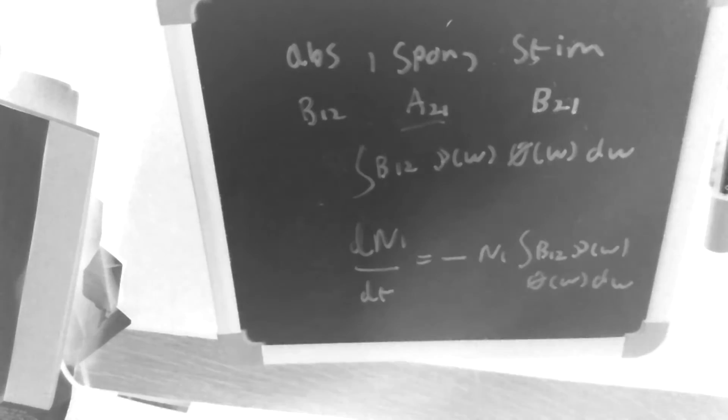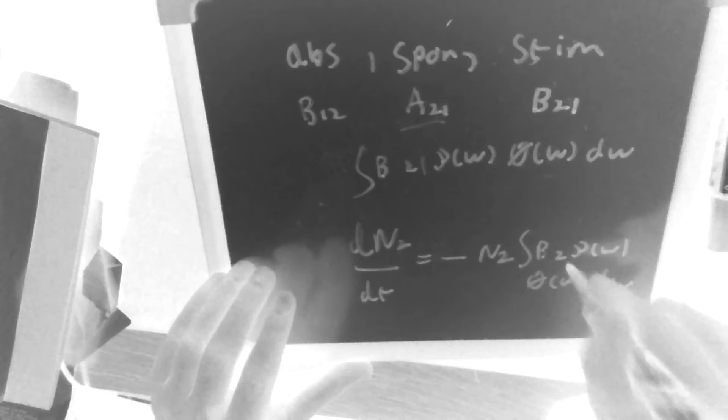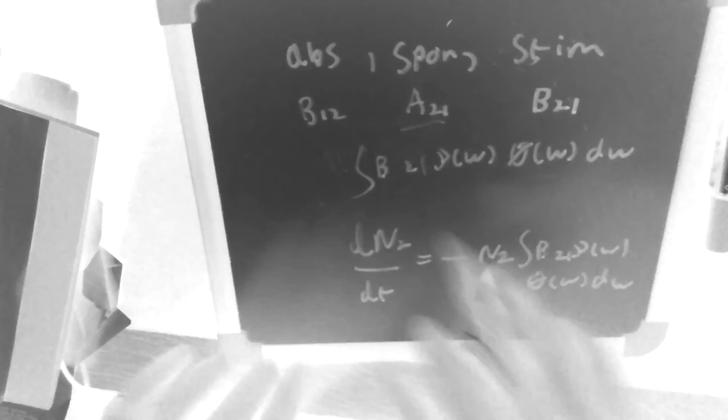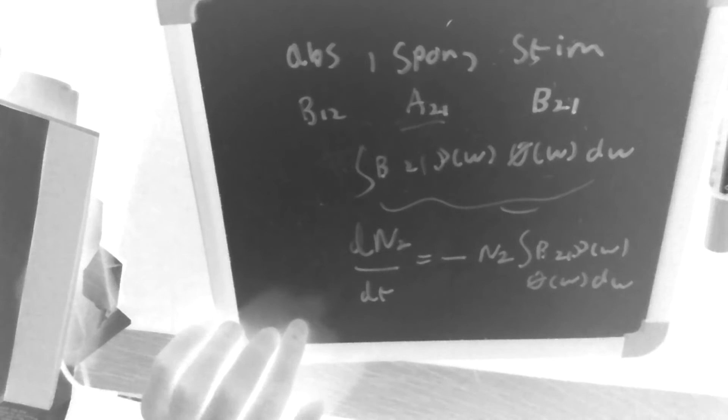And B21 is defined basically exactly the same way, except you do that and you would have to change that to 2. So it's defined such that this here is the probability per unit time, per atom, that an atom in level 2 will decay by stimulated emission to level 1.